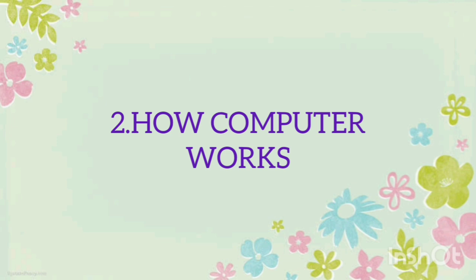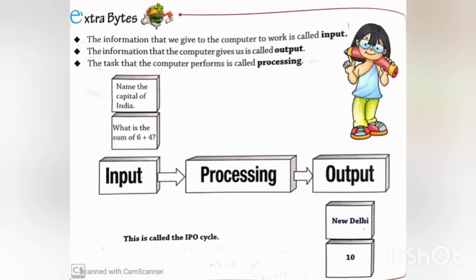How the computer works. The information that we give to the computer to work is called input. The information that the computer gives us is called output. The task that the computer performs is called processing. Input to processing to output — this is called the IPO cycle.